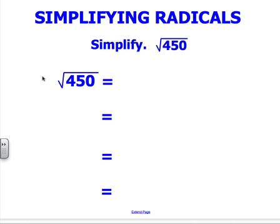In this first question, we have the square root of 450. So I'm going to think about what factors multiply together that give me 450 as a product.